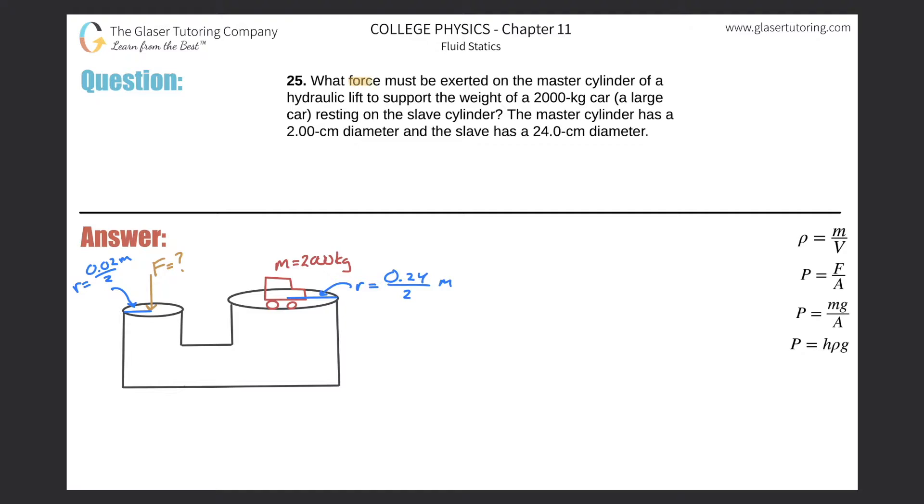Number 25: What force must be exerted on the master cylinder of a hydraulic lift to support the weight of a 2,000 kilogram car resting on the slave cylinder? The master cylinder has a two centimeter diameter and the slave has a 24 centimeter diameter.